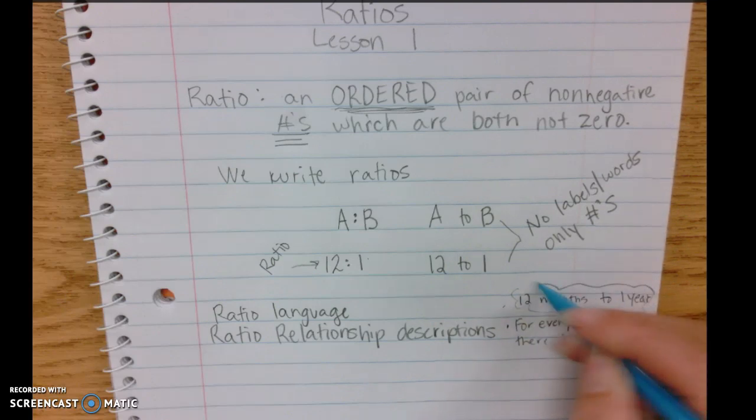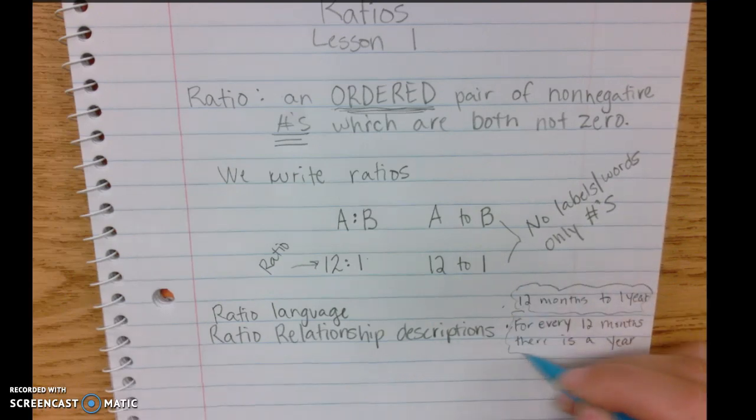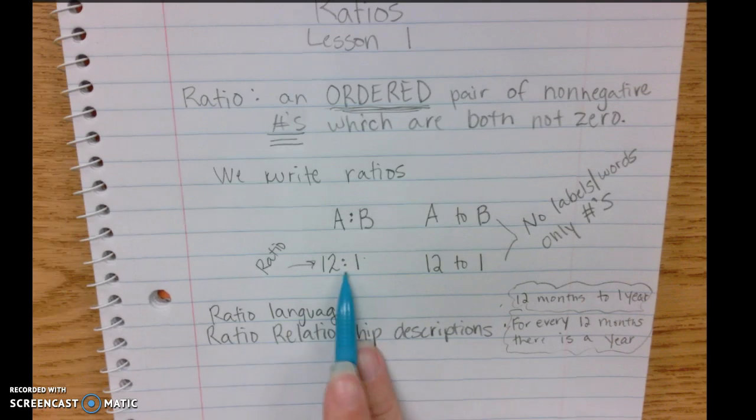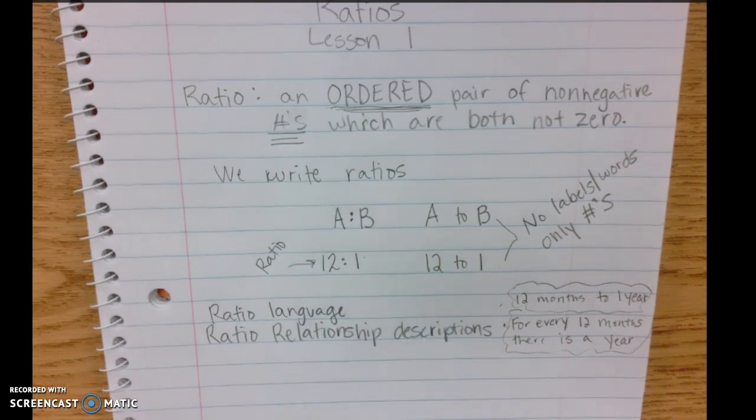So that's the difference. If a question asks you to write the ratio from this description, they want you to write something like this. If they ask you to write a description from a ratio, they want you to write the words like this.